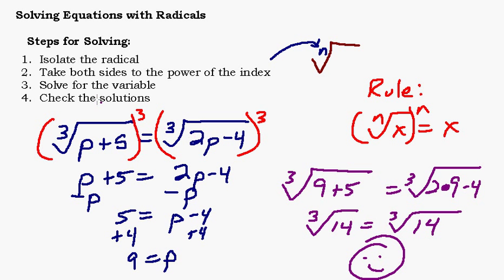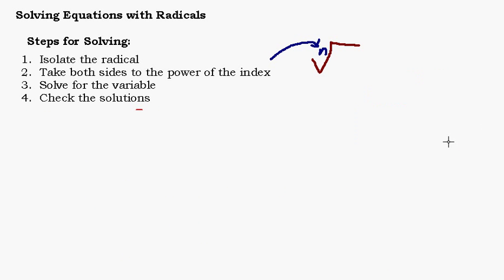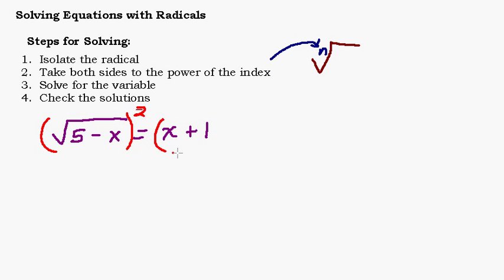If there was some number on one side without a radical, you would cube that number. If it's a fourth root, you'd take both sides to the fourth power. Now let's step it up. We're going to have the square root of 5 minus x equals x plus 1. Step one, isolate the radical — we have it. Step two, take both sides to the second power. On the left we get 5 minus x. A common mistake on the right is to write x squared plus 1, but that's wrong.